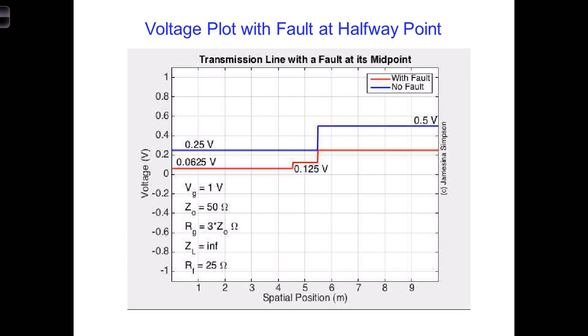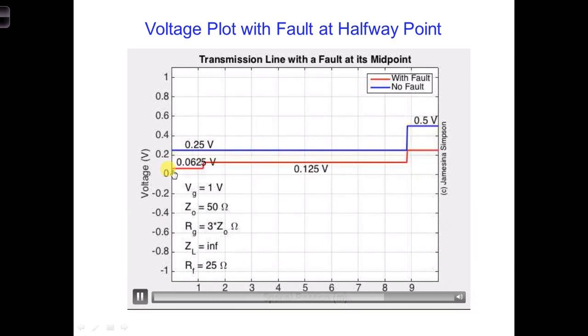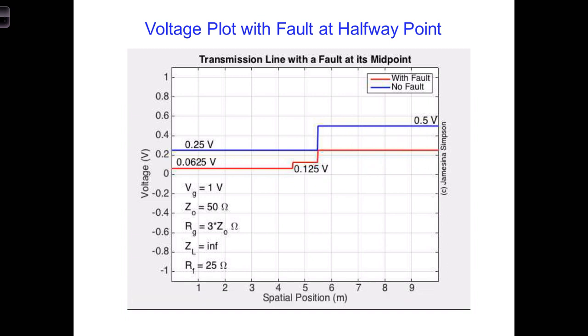Now imagine we're taking a voltage measurement at the generator to see if the transmission line is operating as expected. Let's watch the video again and see how the voltage changes over time at Z equals zero, right here on the left. Right there, we see a different value from the red curve than the blue curve.